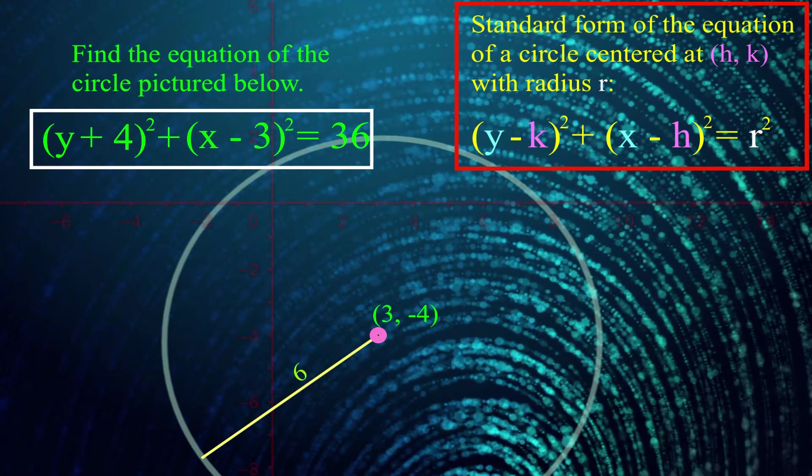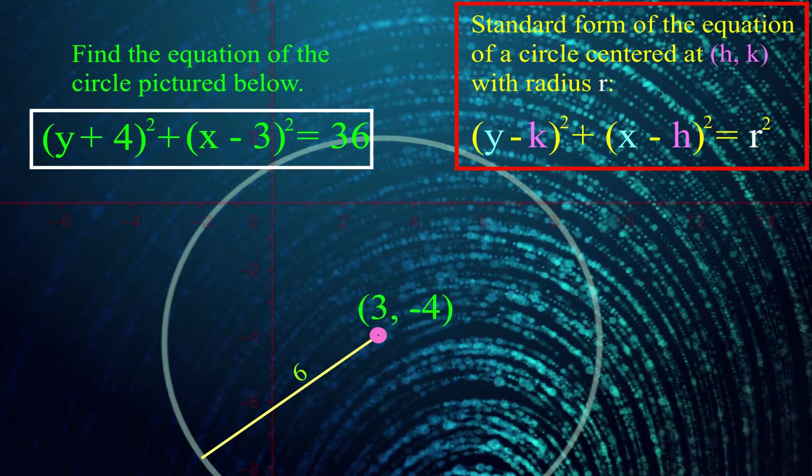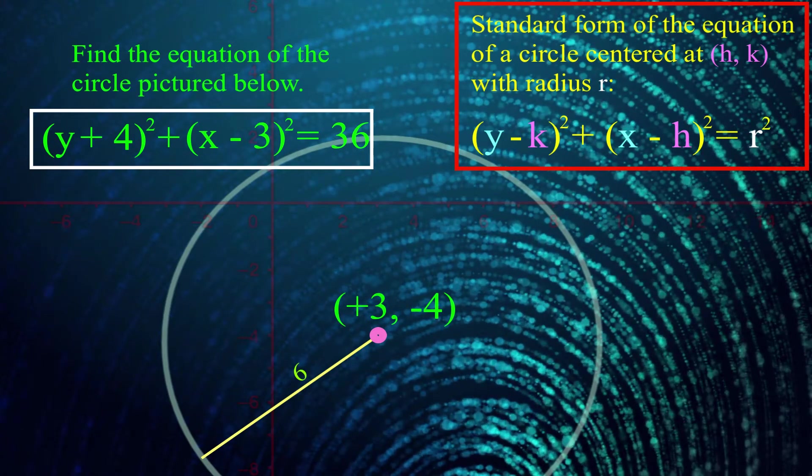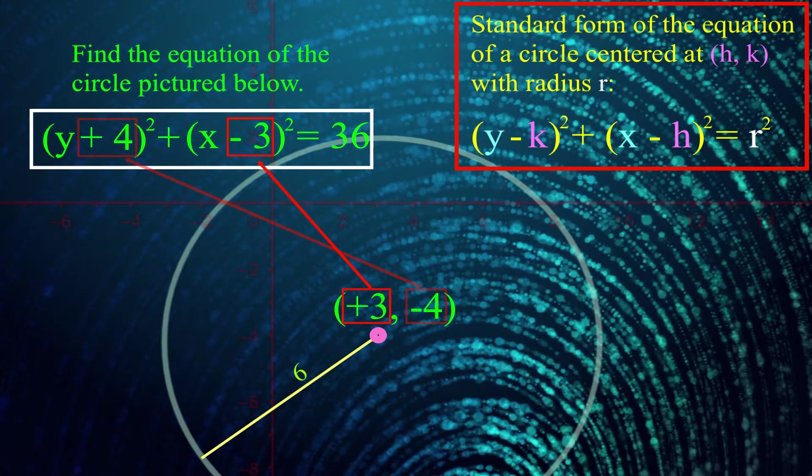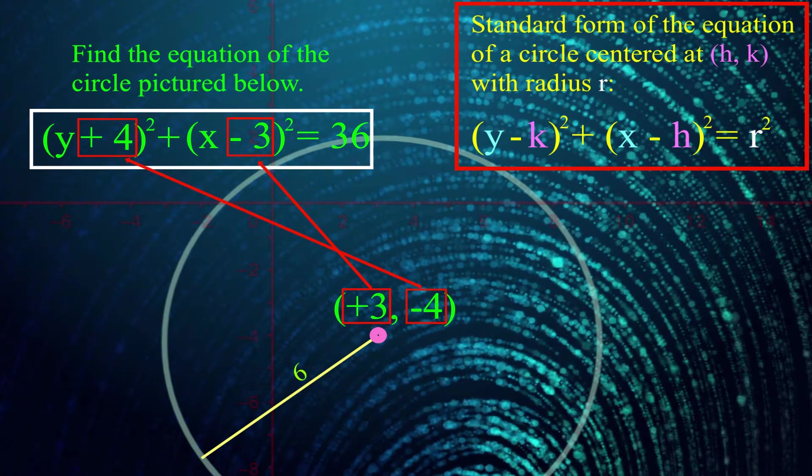A couple things to watch out for. Notice that the x coordinate of the circle is at positive 3 and the y coordinate is at negative 4. However, when we look at the standard form of the equation of the circle, we have x minus 3 and y plus 4. That's weird. No, it's not weird.